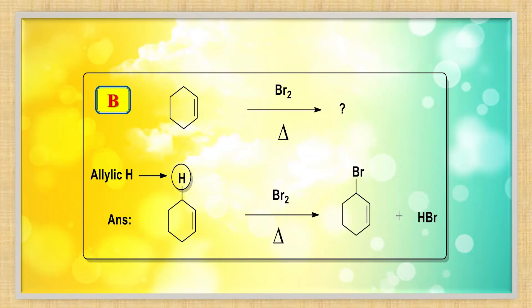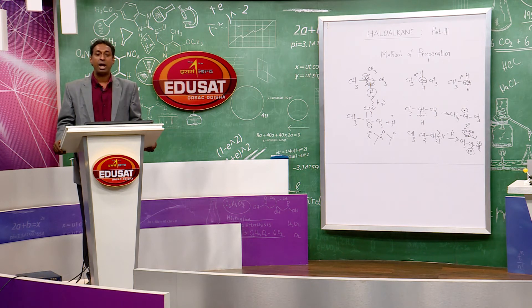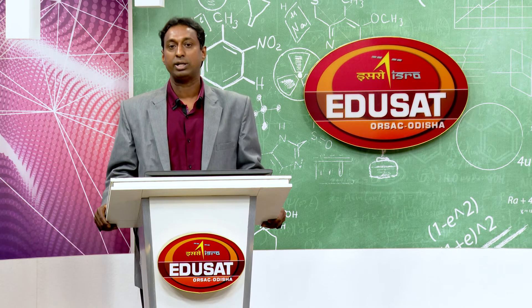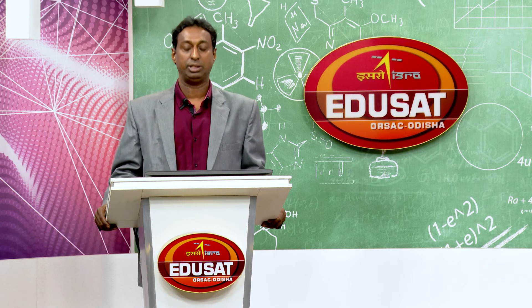Next example: a cyclohexene compound with Br2 in the presence of heat or sunlight — this is allylic bromination. The allylic carbon (marked on screen) has its hydrogen replaced by bromine to give 3-bromocyclohexene.